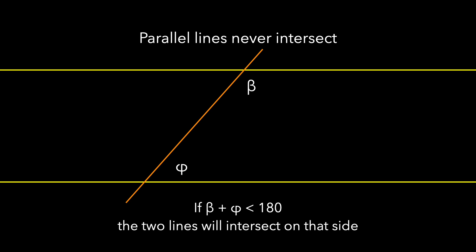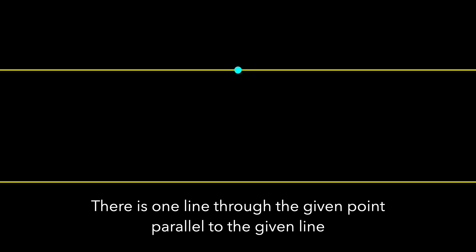And this was equivalent to our observation that given a line and a point not on the line, we can always construct exactly one line through a given point parallel to the given line.